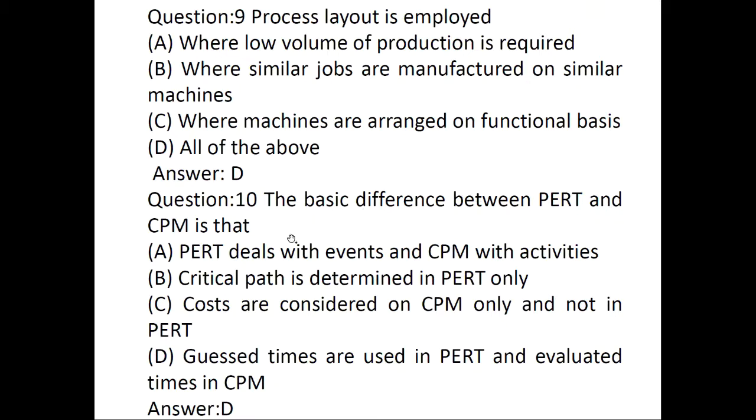The basic difference between PERT and CPM is: PERT deals with events and CPM with activities, critical path is determined in PERT only, costs are considered on CPM only and not in PERT. The basic difference is guessed times are used in PERT and evaluated times in CPM. CPM uses one time estimate and PERT uses three time estimates.